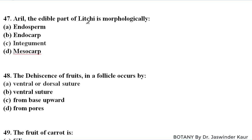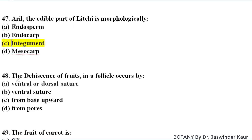The aril — the edible part of litchi — is morphologically the integument of litchi. The dehiscence of fruits in a follicle occurs through the ventral or dorsal suture; it dehisces from either the ventral suture or the dorsal suture, from one side only.